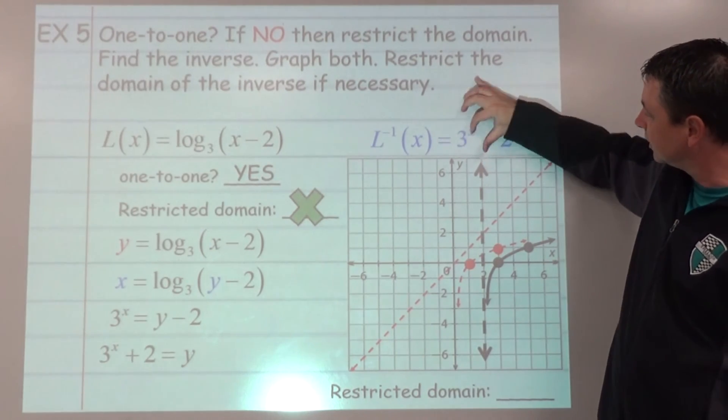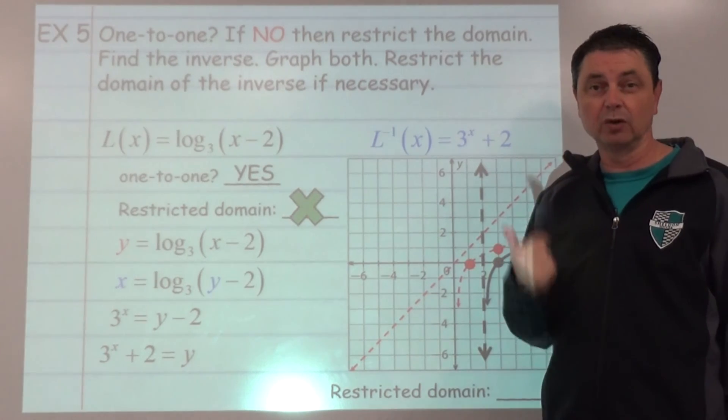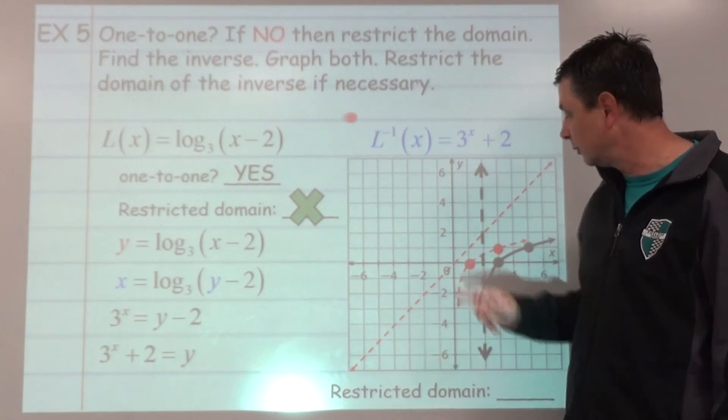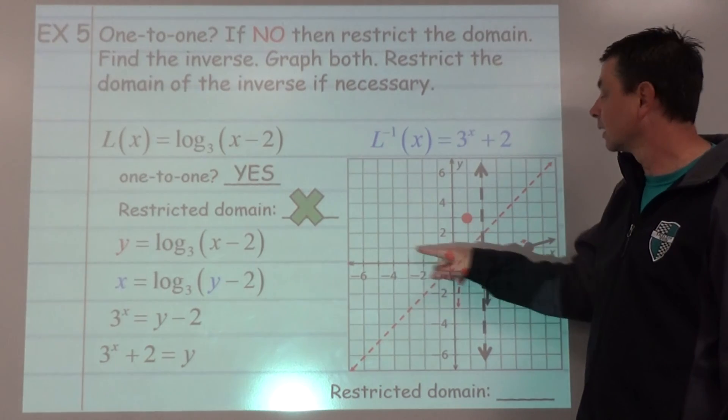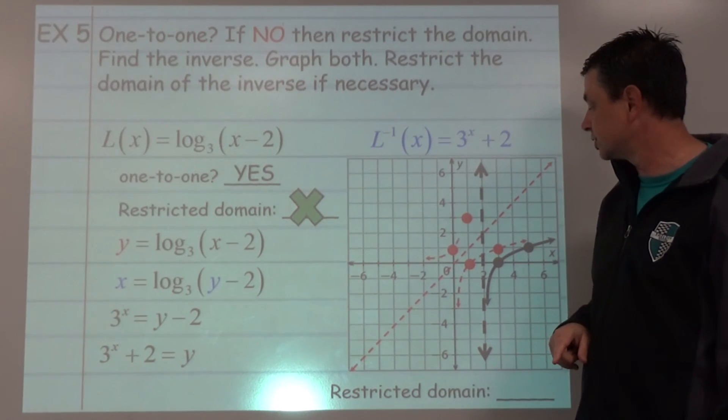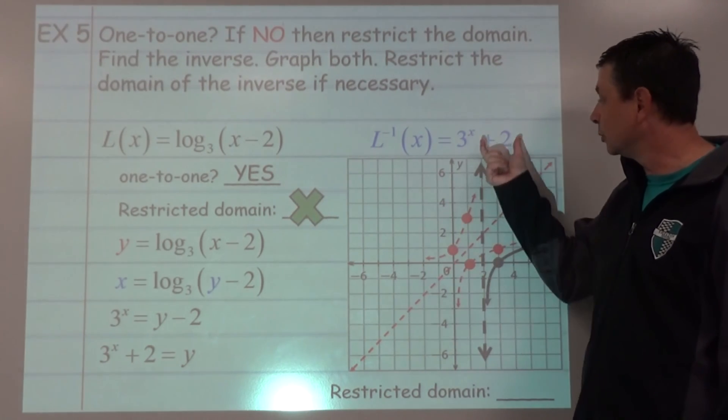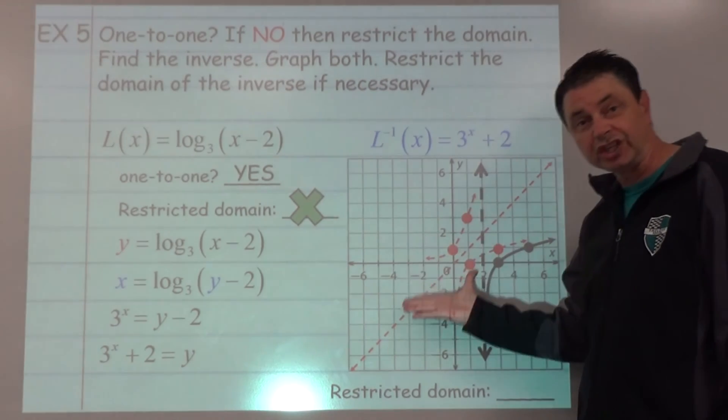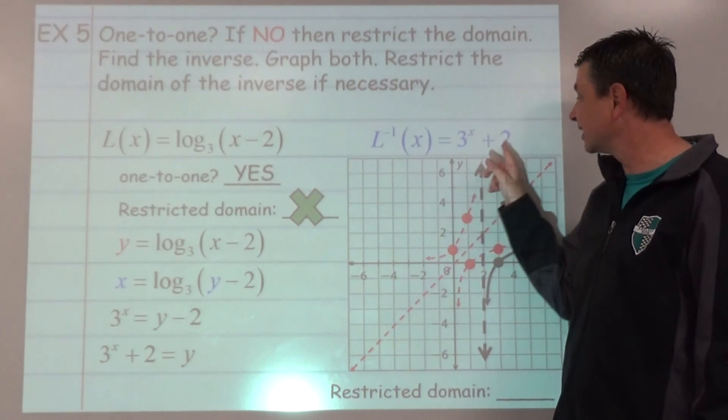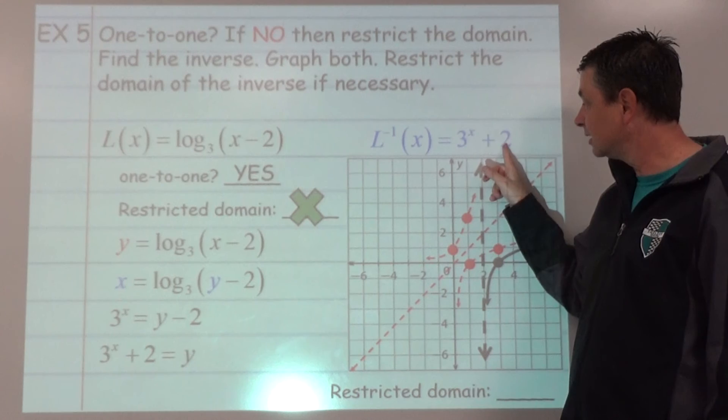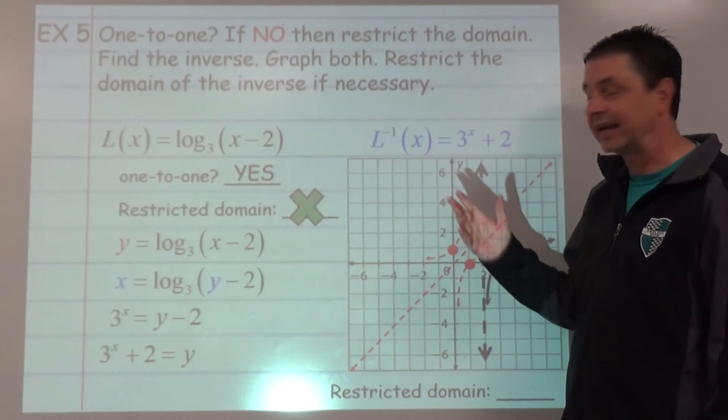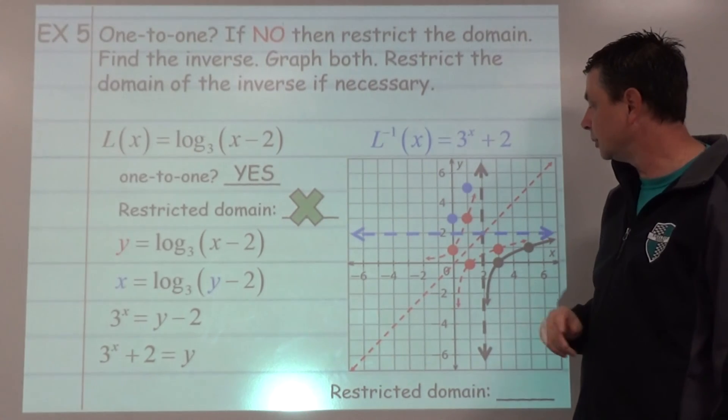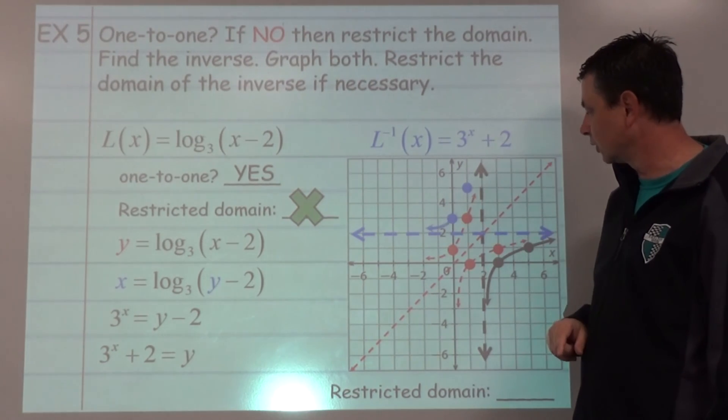Parent function 3 to the power of x. Plug in a 0. Plug in a 1. 0 comma 1, 1 comma 3. Airplane taking off is our shape, dotted. And then the plus 2 means we're going to shift up 2 because that's not part of the x. It's our k value. So we're going to shift including the asymptote up 2 to draw the graph.